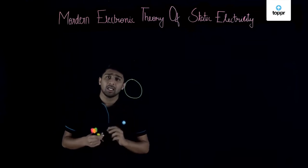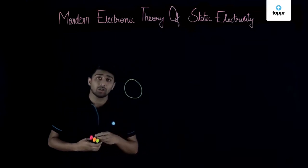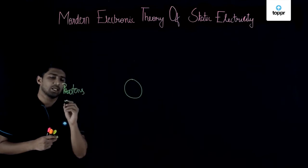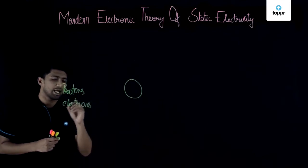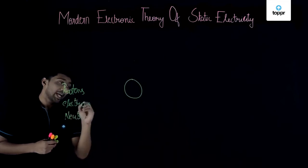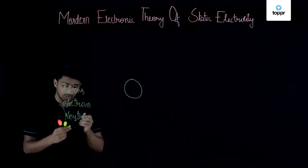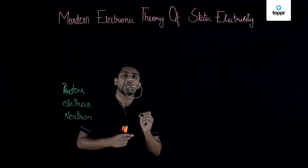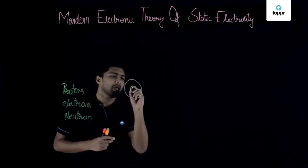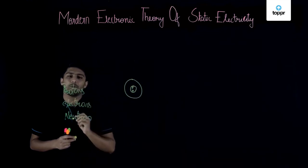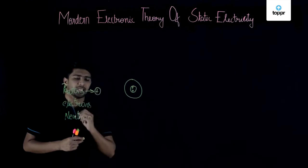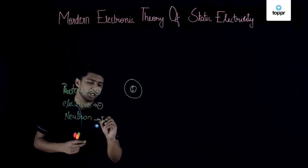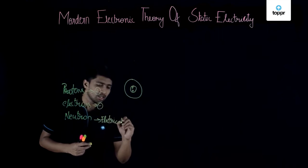In an atom, you can find protons, electrons, and neutrons. You will be able to find protons and neutrons at the center of the atom, called the nucleus. Protons are represented with a positive sign, electrons with a negative sign, and neutrons are electrically neutral.